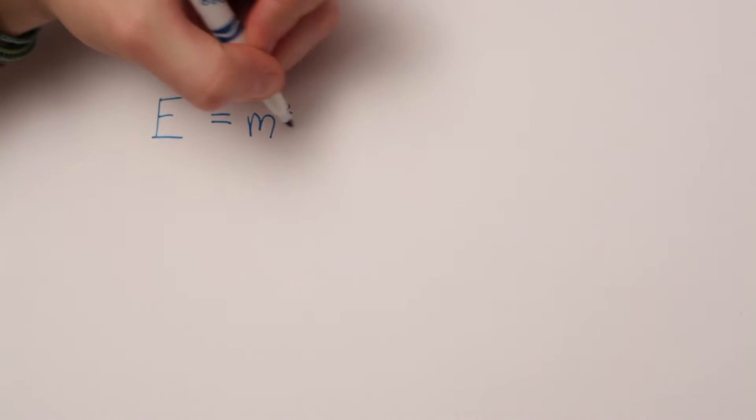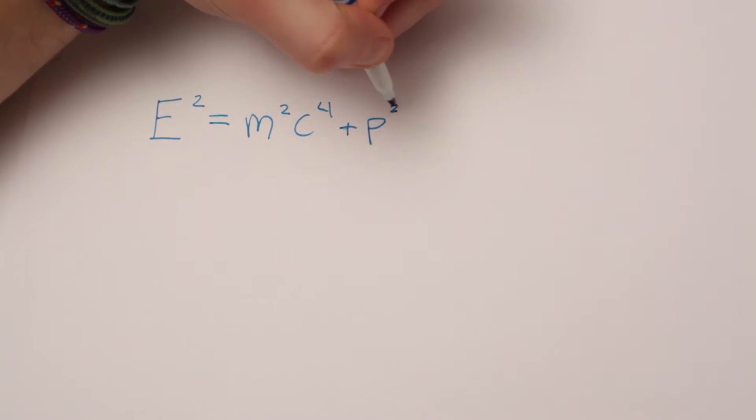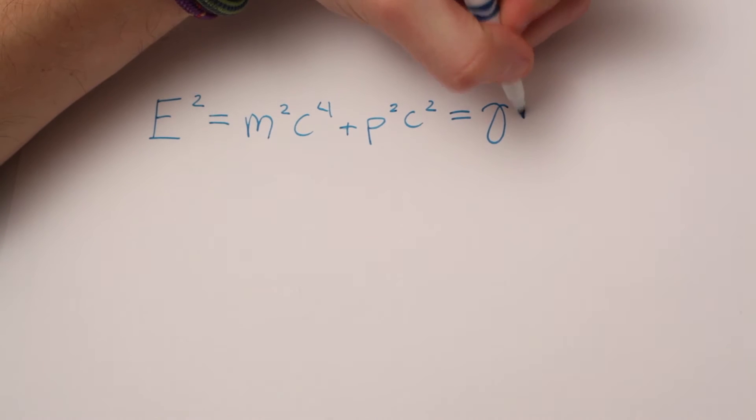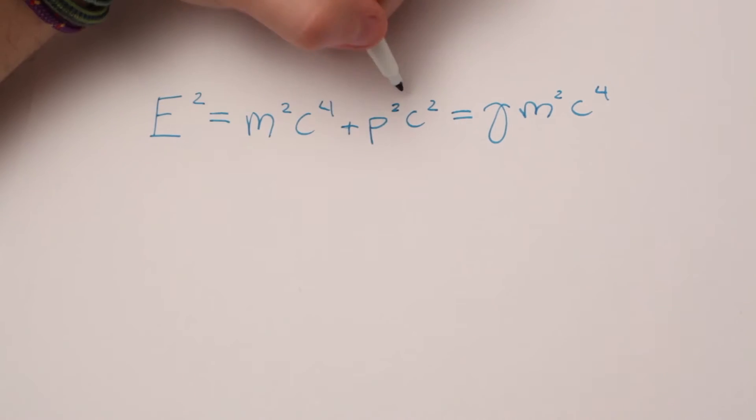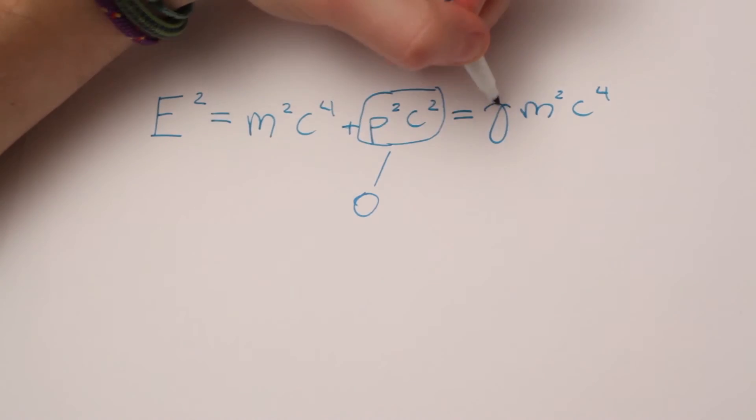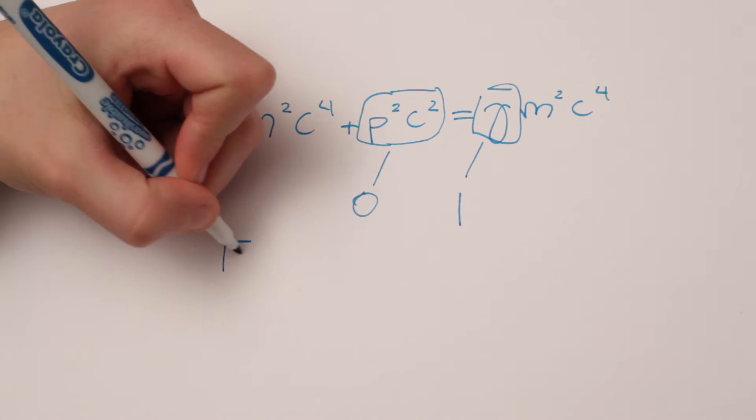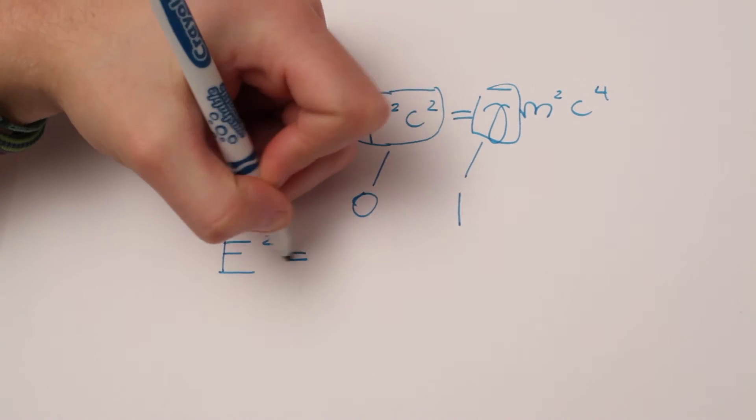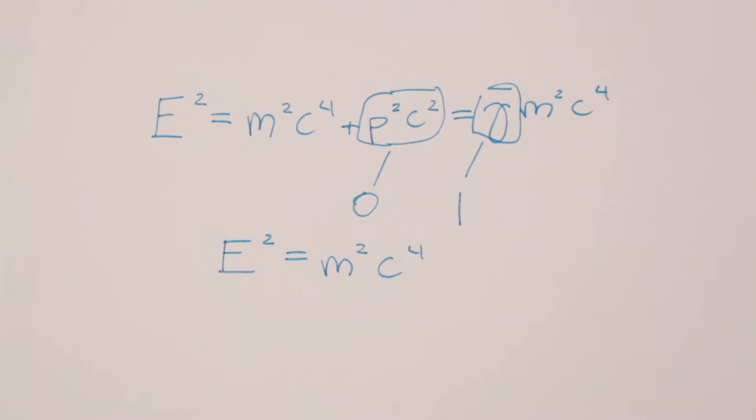Now, let's look at the most famous equation in the world, E equals mc squared. E equals mc squared is actually not the whole equation. The full version is E squared equals m squared c to the fourth plus p squared c squared, which is also equal to gamma squared m squared c to the fourth. If you are at rest though, you have zero momentum and a gamma value of one. So now we have E squared equals m squared c to the fourth. If you take the square root of this, you're left with E equals mc squared, but let's leave the equation like this for now.